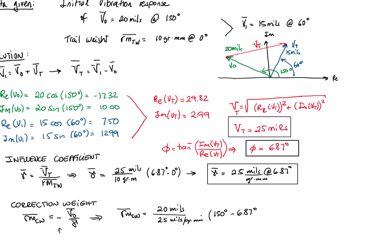Here we have a negative sign that we will compensate with 180 degrees because we want to counteract the heavy spot. That gives me a value of 8 gram millimeters at 323.13 degrees.